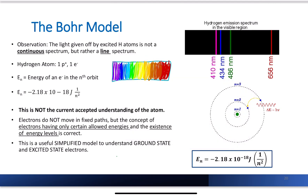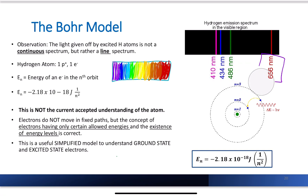A continuous spectrum looks like a rainbow with no separation in color. A discrete or line spectrum is where we have individual lines that show up. This is what happens when an element is excited and then emits energy back down to its ground state — it emits at specific wavelengths. It is called a line spectrum.